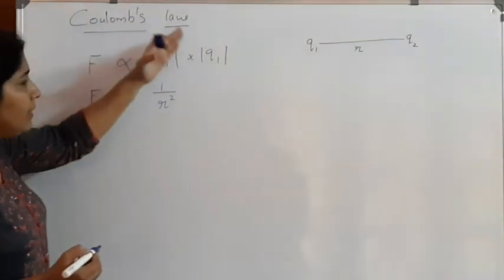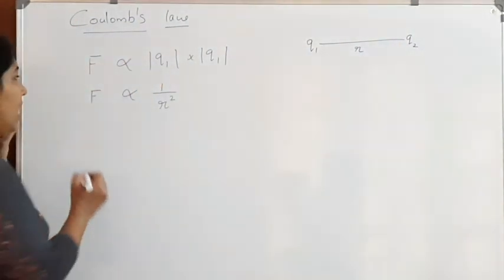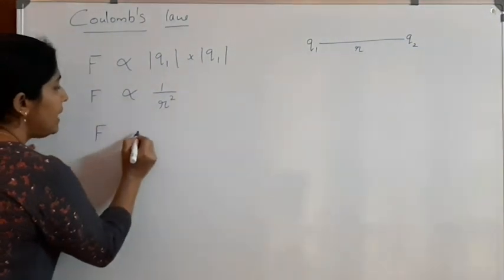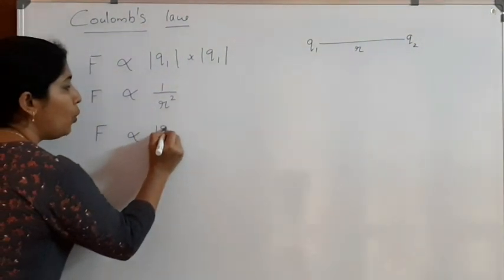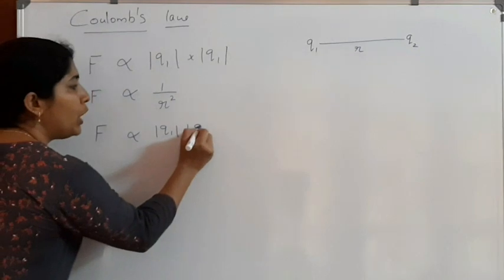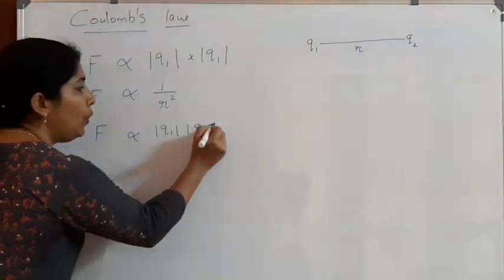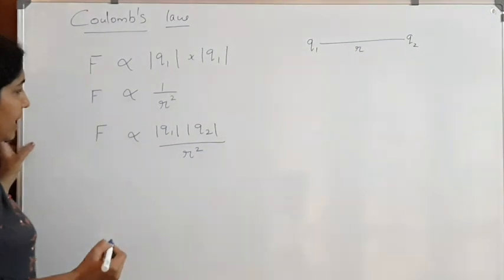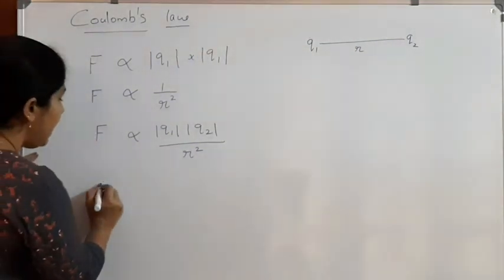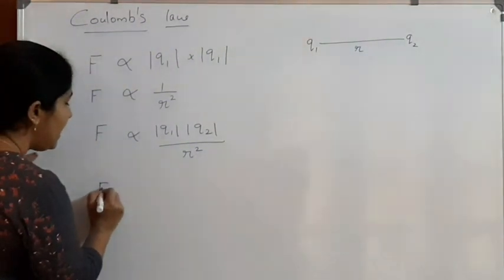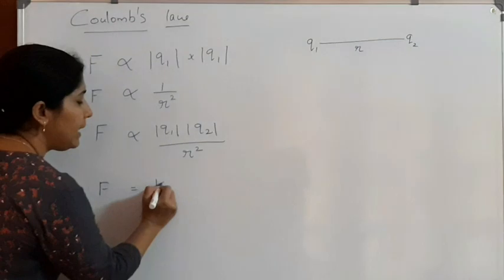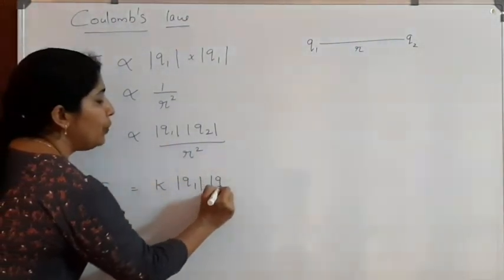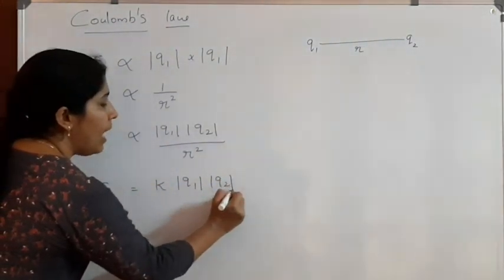On combining these two statements, we can write the force between the two charges is directly proportional to |Q1| × |Q2| divided by R². From this equation we can write F is equal to a constant K into |Q1| × |Q2| divided by R².